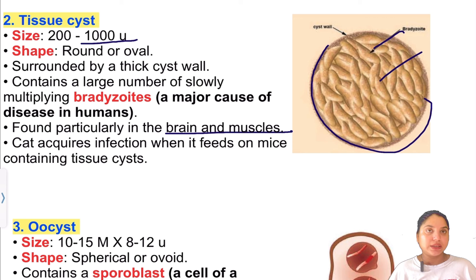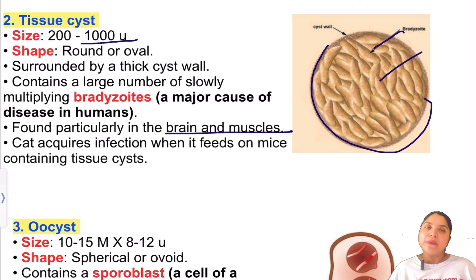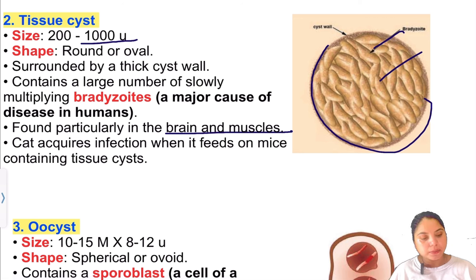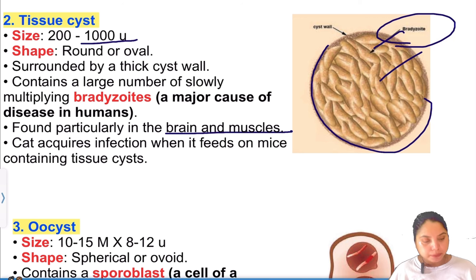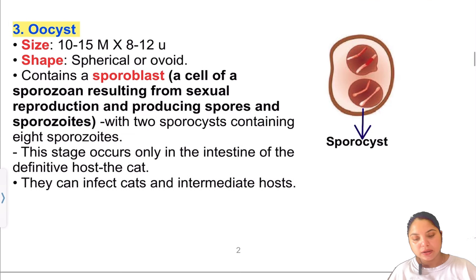The cat acquires infection when it feeds on mice containing tissue cysts.